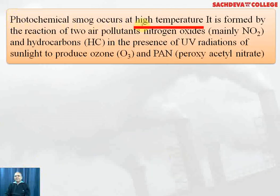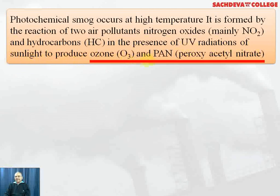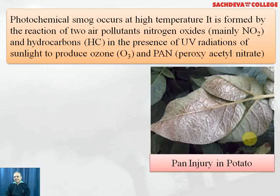Photochemical smog occurs at high temperature and is formed by the reaction of two air pollutants — nitrogen oxides, mainly NO2, and hydrocarbons — in the presence of ultraviolet radiation from sunlight, to produce ozone and PAN, that is peroxyacetyl nitrate. You can see PAN injury in potato leaves, where the leaf color has become light brown. PAN is one of the biggest pollutants of plants.